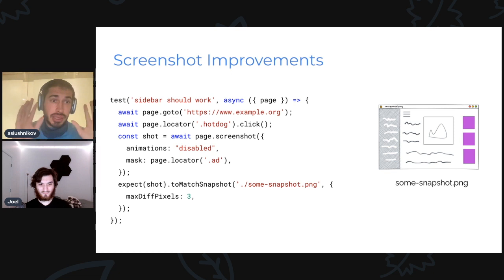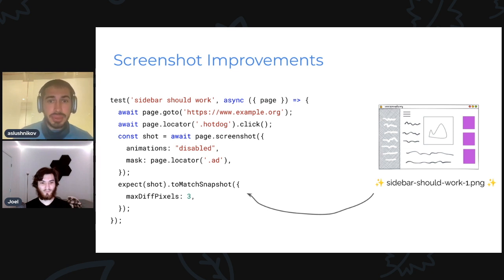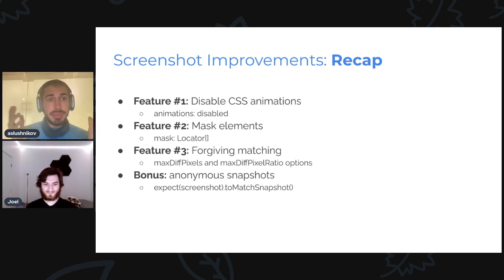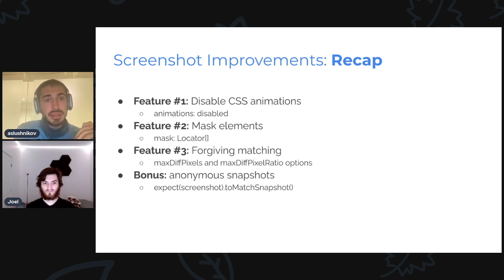This is cool and this will yield me just one screenshot. Now there is bonus content for this release — I am lazy writing these names for snapshots, I don't want to write them ever. So since this version, I can just drop it and Playwright test will generate something nice automatically. Quick recap: we have CSS animation disabling, and also if you have not a CSS animation but some other animation like setTimeout-based animation, we have something in the works. Second, mask elements — you can mask multiple different elements. We have forgiving matching and we have anonymous snapshots as a bonus.